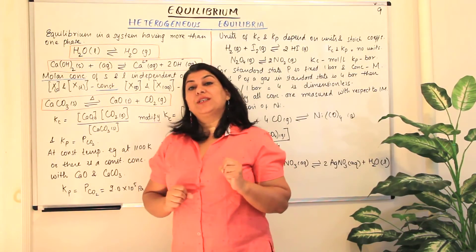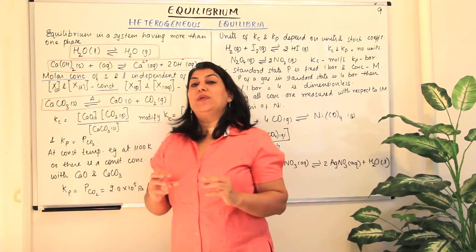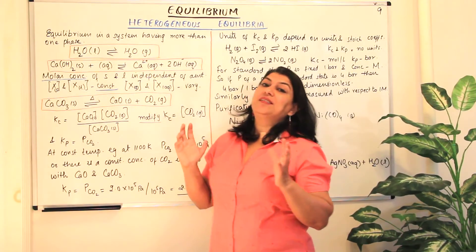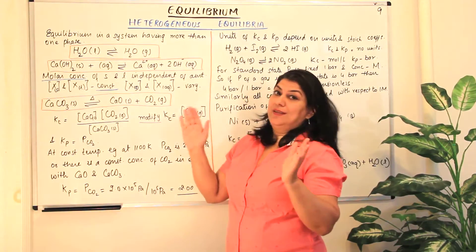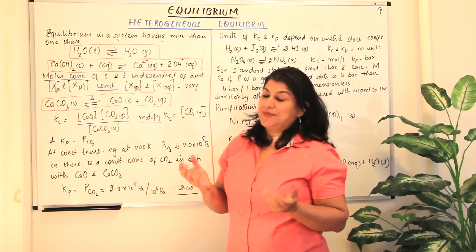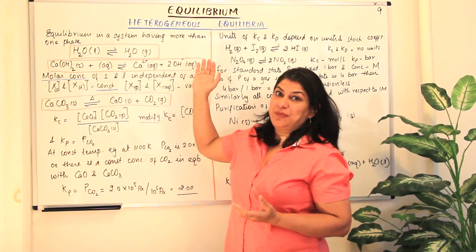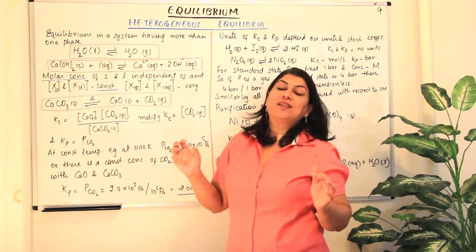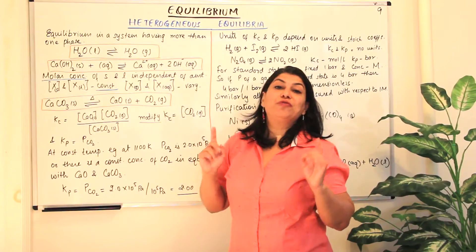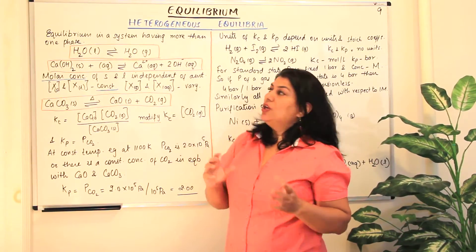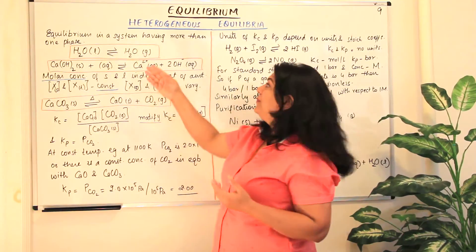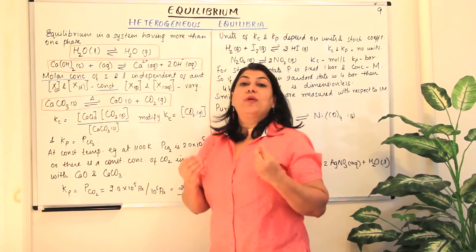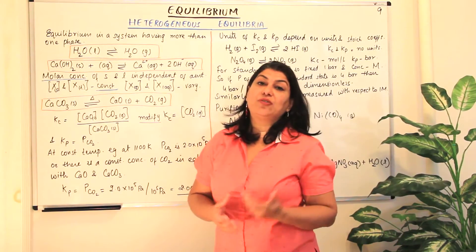In parts 7 and 8 I told you about homogeneous equilibrium — where all the reactants and the products are in the same phase, so the reaction mixture is homogeneous. A heterogeneous equilibrium is one where all the reactants and the products are not in the same phase; they have different physical states. So a system in which more than one phase is present is a heterogeneous equilibrium.